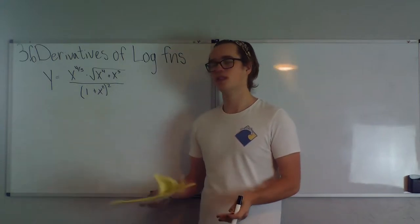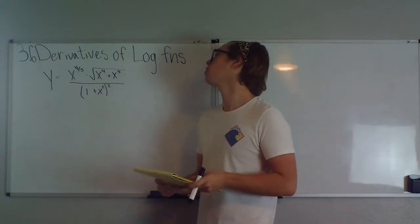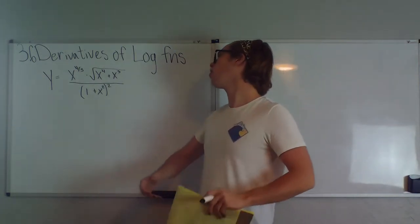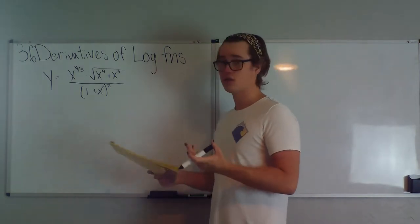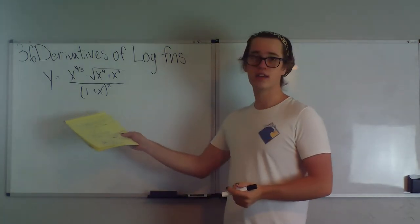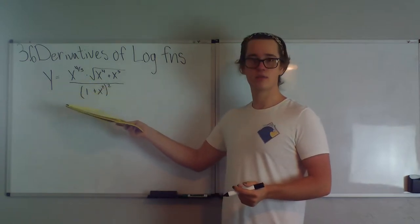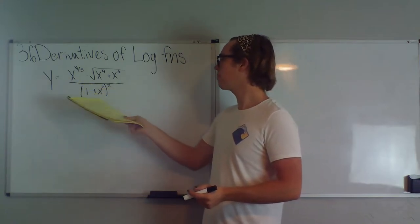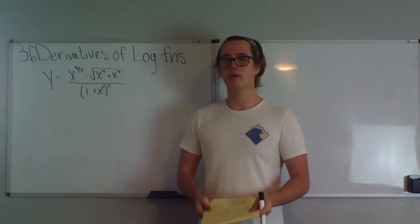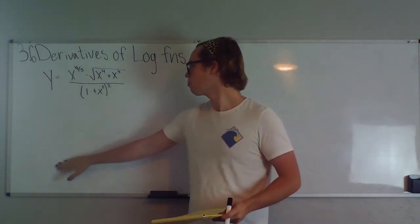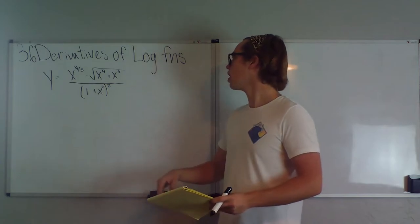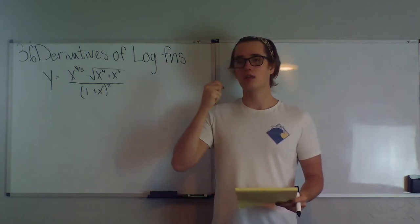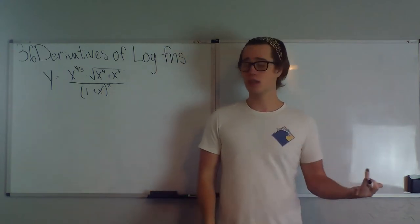We have this function: y equals x to the 4/3 times the square root of (x to the 4th plus x cubed), all over (1 plus x squared) squared. That's an ugly, disgusting, terrible function. We'd have to do multiple product rules and possibly multiple quotient rules to solve this. But because of our new property, we can do it faster and in a much easier manner.